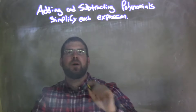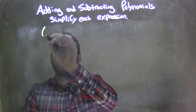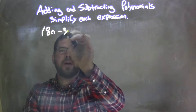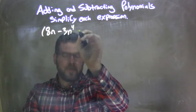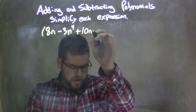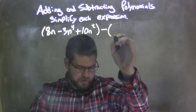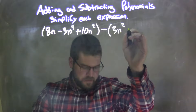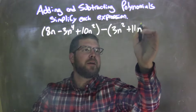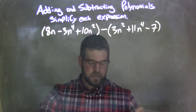So if I was given this polynomial: 8n minus 3n to the 4th plus 10n squared, parentheses minus parentheses, 3n squared plus 11n to the 4th minus 7.